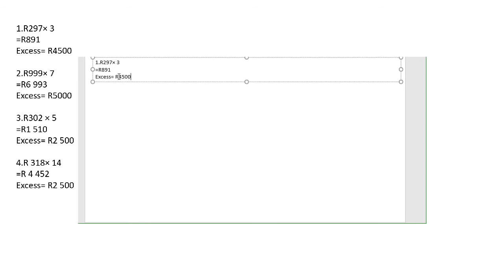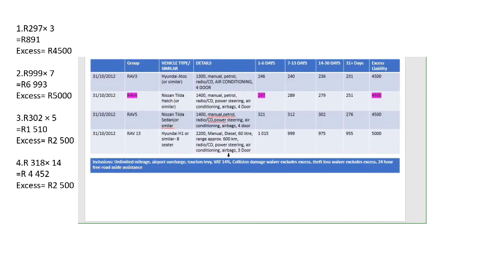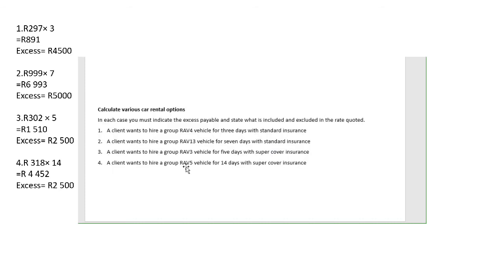The excess that is payable is 4,500 rands. What is included: unlimited mileage, airport charge, tourism levy, and so forth. Number two: a client wants to hire a RAV13 vehicle for seven days with standard insurance — again we look at the first table and we look at RAV13.